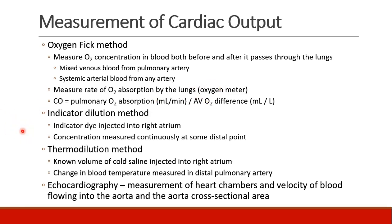Another way is with an indicator dye — inject it into the right atrium through a central line and measure concentration at another point to assess pumping efficiency. The method most commonly seen in cardiac surgery is thermodilution, using a pulmonary artery catheter. Cold saline of a known volume is injected into the right atrium; the catheter's temperature probe at the tip measures how blood temperature changes — dropping when the cold saline arrives, then gradually warming as blood continues to pump. By measuring this temperature change as a function of time, cardiac output can be calculated. Finally, echocardiography allows detailed measurements of heart chambers, blood velocities into the aorta, and aortic cross-sectional area to calculate cardiac output.